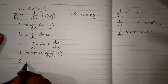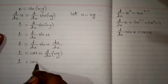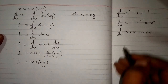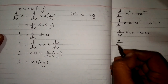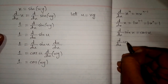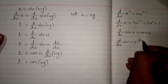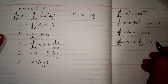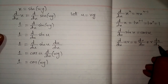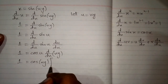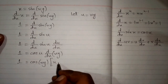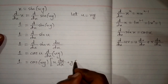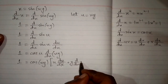We again put the value of u which is xy, and here we apply the product rule of differentiation, which states that the derivative of uv is equal to u times the derivative of v plus v times the derivative of u. So, we write x times the derivative of y plus y times the derivative of x.